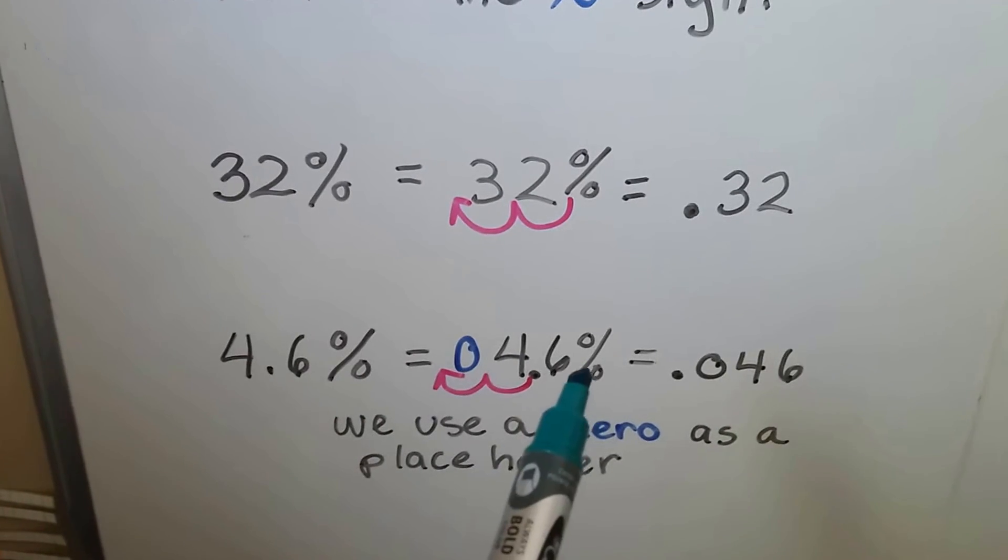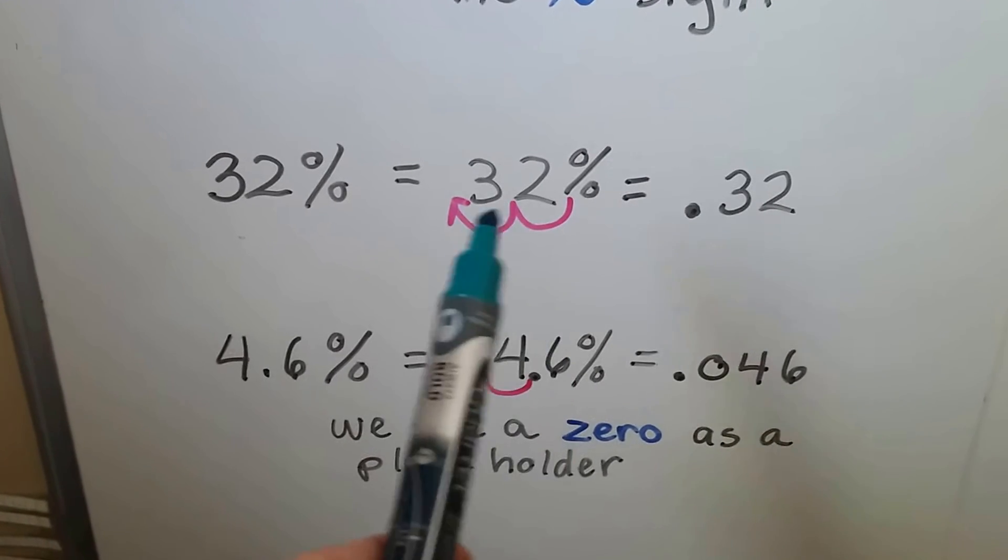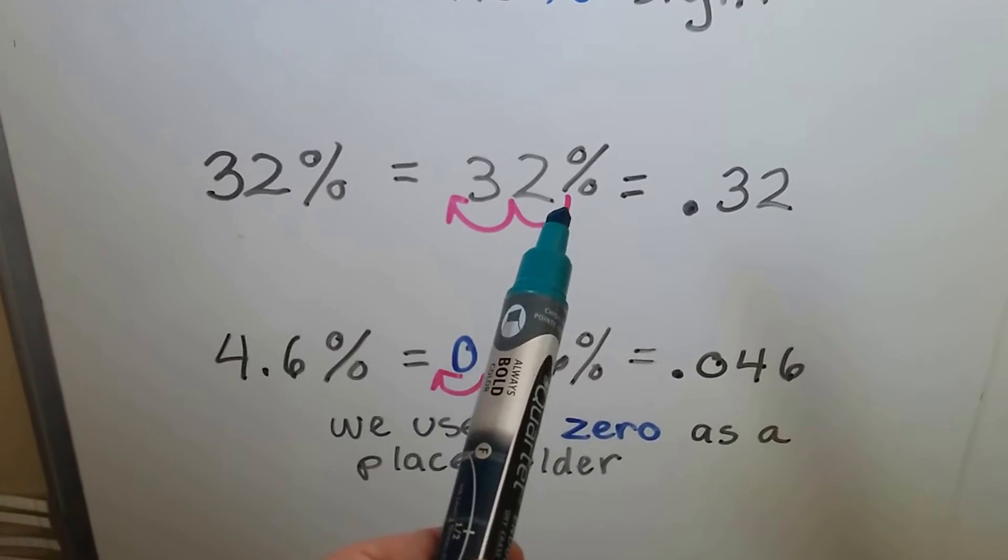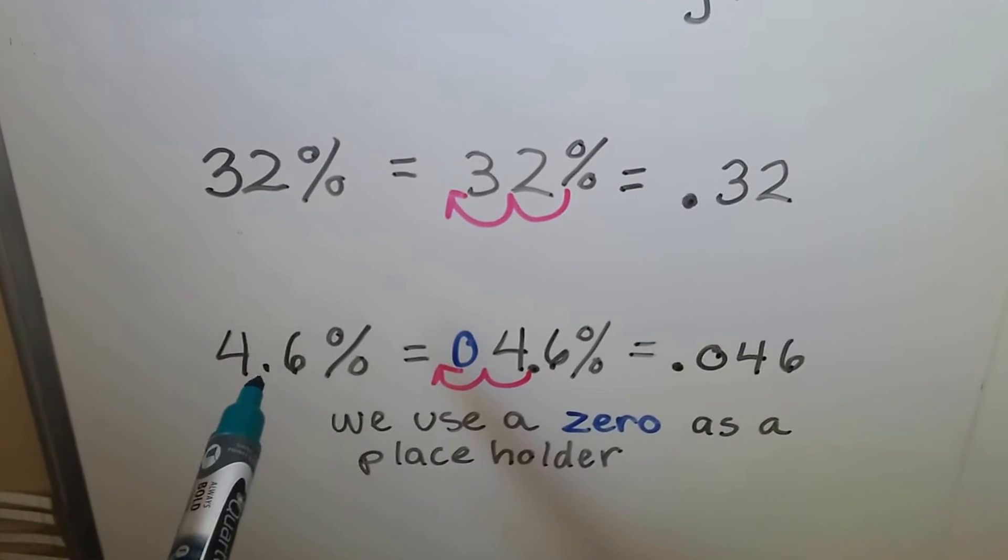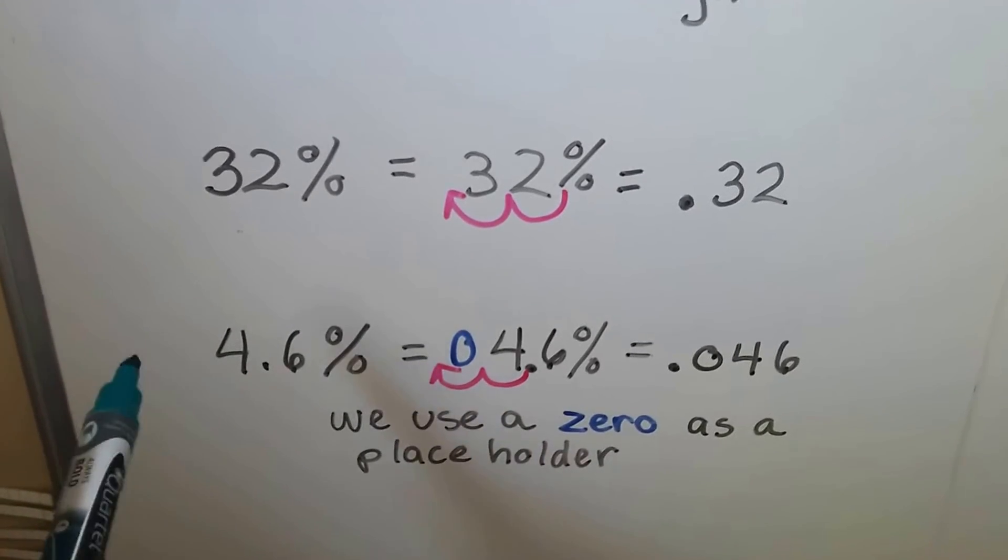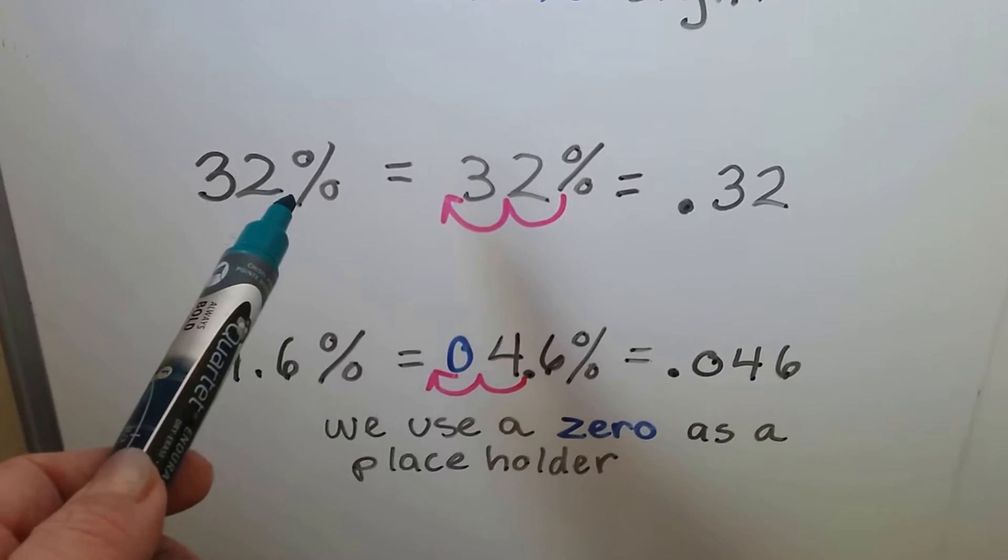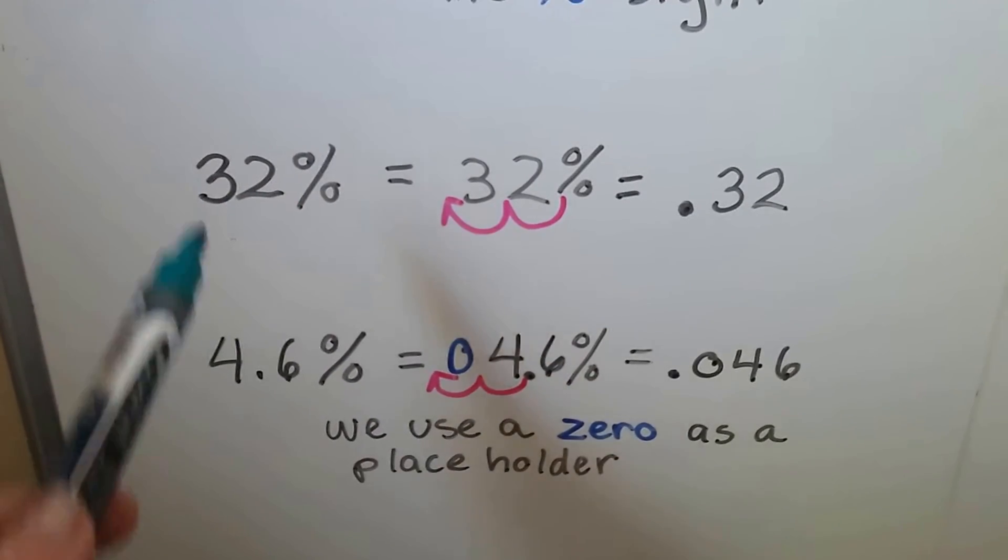So from wherever this decimal point is, or if there isn't a decimal point, you go from the percentage sign, you do two hops. In this case, there was a decimal point, and we could go two hops to the left. This one, there wasn't one, so we just started from here and went two hops.